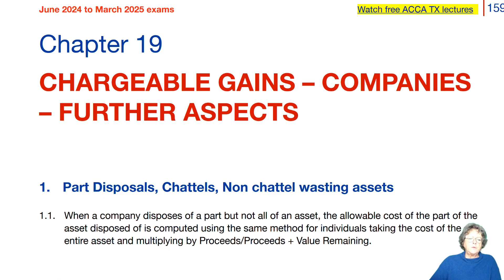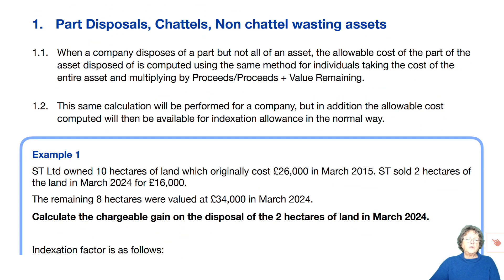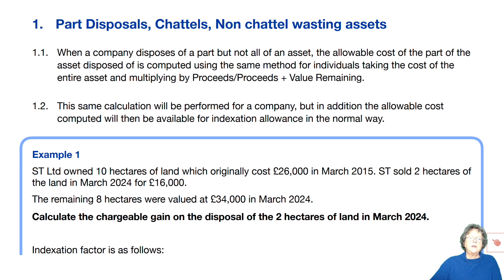This chapter is going to deal with some further aspects of gains for companies. We're going to look at various different aspects, including part disposals, chattels, and non-chattel wasting assets. All of these have been dealt with in the individual chapter on capital gains, on part disposals and chattels. So if you haven't watched that chapter, you need to go back and do so. If you have watched it, this is an excellent revision opportunity to bring all those various different aspects back to mind.